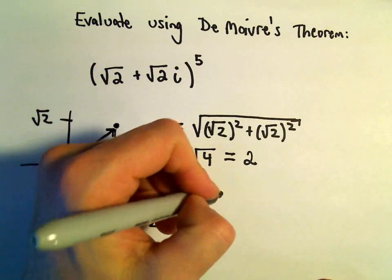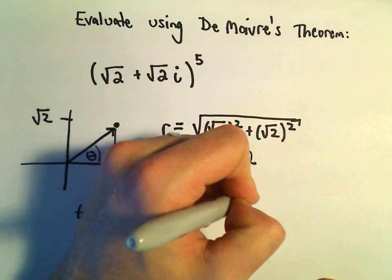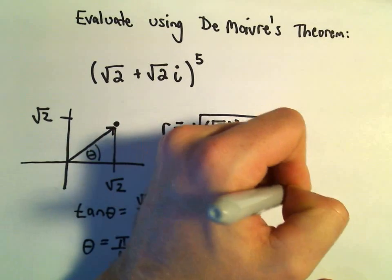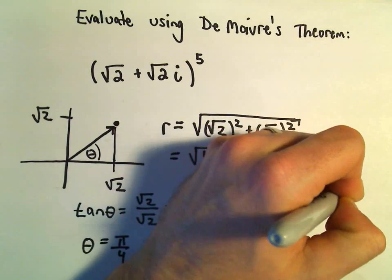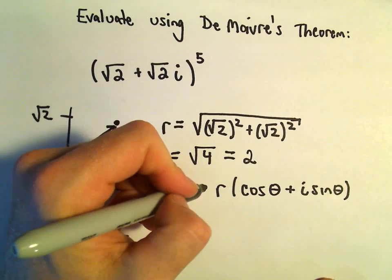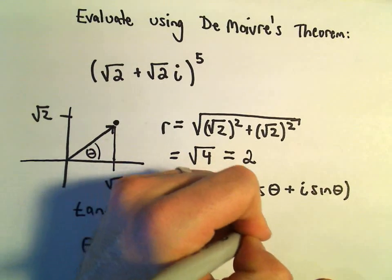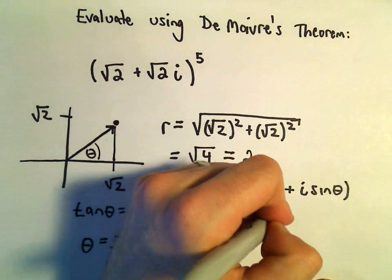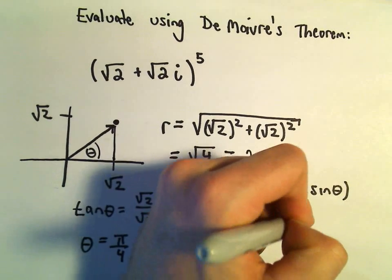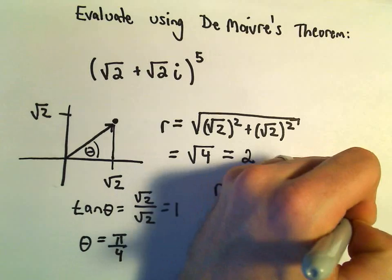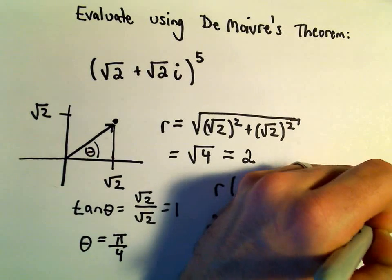So in this case, now all we have to do is just use our formula, r cosine theta plus i sine theta. So in this case we would get 2 times cosine of π/4 plus i sine of π/4.